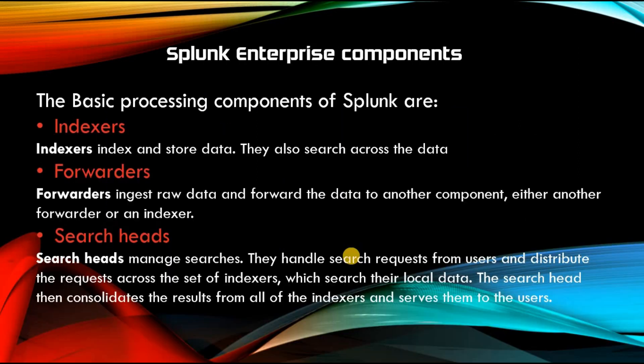A Splunk Enterprise has three main components. Number one: indexers. Number two: forwarders. And number three: search heads. Indexers are the components which do the indexing and store the data — they also search across the data. Forwarders ingest raw data and forward it to another component, either another forwarder or an indexer.